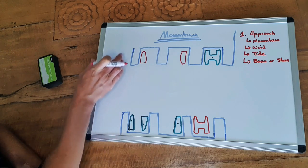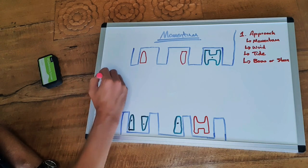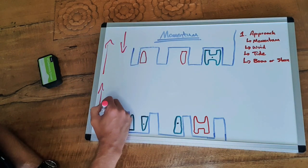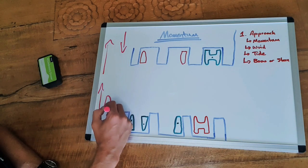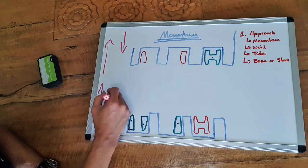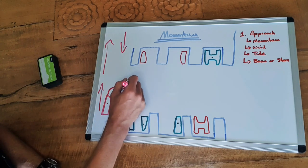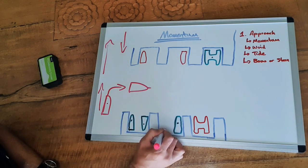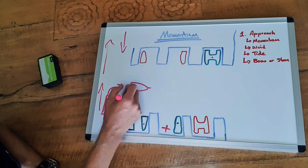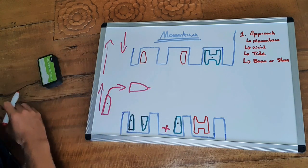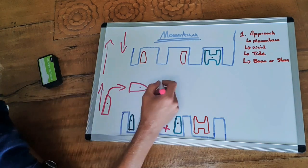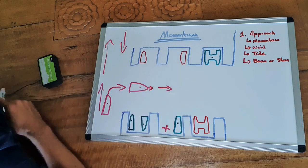Now if we assume that here is our normal channel, this is where all our traffic's flowing either way. And we come up the channel and we're going to make our turn in towards our berth. Now as we come along, we've got momentum in this direction.